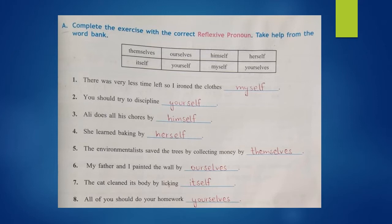Number one: There was very little time left so I ironed the clothes myself. 'I' is the subject, therefore 'myself' is used here. Number two: You should try to discipline yourself. Number three: Ali does all his chores by himself. Number four: She learned baking by herself.